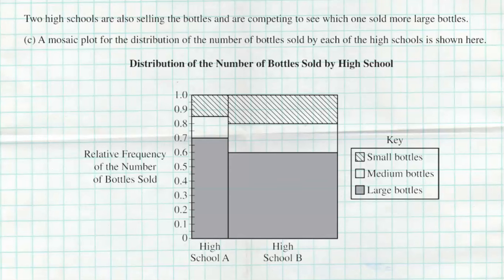And then the final question, we're now talking about two high schools who are also selling the bottles and are competing to see which one sold more large bottles. So we have here a mosaic plot for the distribution of the number of bottles sold by each of the high schools shown below. Now mosaic plot not only shows the relative frequencies, but it also shows the size relative to the whole, and that's why we see two bars for the high school A and high school B, but the high school B bar has more area because that's showing that that percentage was worth more because it came from a larger sample size. So if you didn't know about mosaic plot then that certainly helps.